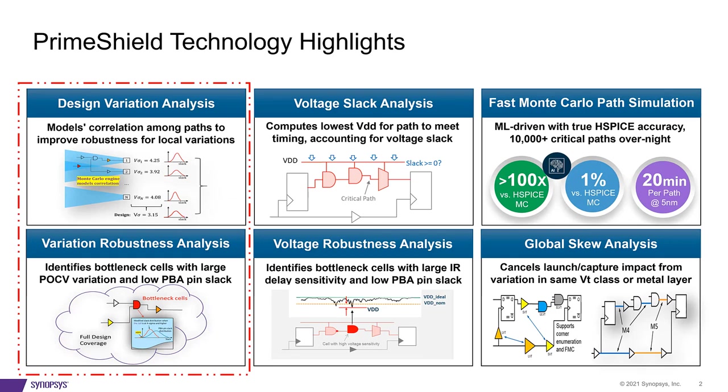The DVA feature checks design level robustness based on user provided paths. It helps to model the design's WNS distribution based on local variation. Then we have the variation robustness analysis that provides design level coverage by considering all the cells in the design and checks how much variation each cell can have.